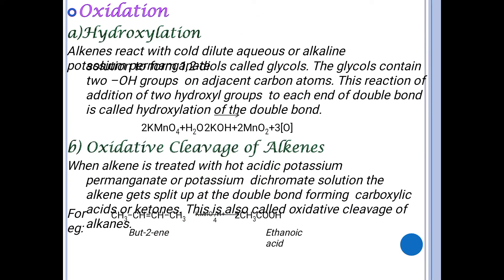For oxidation, alkenes react with cold dilute aqueous alkaline potassium permanganate to form glycols. Glycols contain two hydroxyl groups on adjacent carbon atoms. This reaction of adding two hydroxyl groups is known as hydroxylation of the double bond.